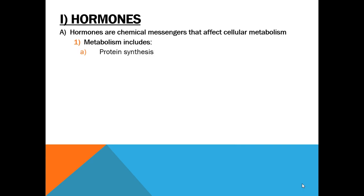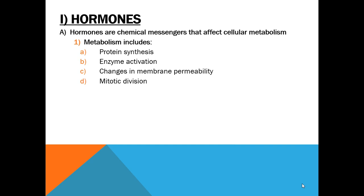Some examples of metabolism: we have protein synthesis, which is anabolic — building proteins. Enzyme activation can go either way; we have enzymes involved in synthesizing, like DNA polymerase and RNA polymerase, and we also have digestive enzymes like lactase and proteases which break down substances. We also have changes in membrane permeability — insulin does this; when it binds to a cell membrane, it changes the permeability to permit glucose to enter. Mitotic division and cell division are the synthetic part. Finally, the release of enzymes, hormones, and any other secretion is involved in regulating and monitoring metabolism.